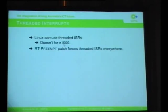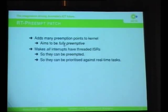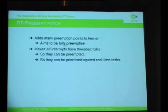The RT preempt patch - the idea of RT preempt is to try to make the kernel completely preemptible everywhere and so to reduce latencies as much as possible for real-time tasks. It forces the use of threads in the interrupt regime, so every interrupt will be done by a thread. This allows interrupts to be prioritized against real-time tasks, so you can have some real-time tasks that are higher priority than most interrupts. There's a whole page on the audio wiki about how to prioritize your various tasks for low-latency audio against interrupts from the network.